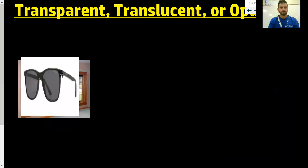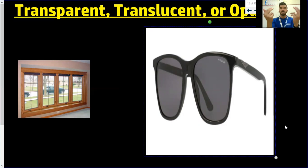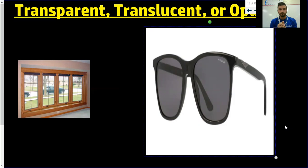Sunglasses — this was the example I was saving because it's the best example of something that is translucent. It's definitely not transparent because when you wear sunglasses, you're trying to block the sun. If it was transparent, all that light would travel through and go straight into your eyes — they'd serve no purpose. If it was opaque and no light traveled through, you wouldn't be able to see — you'd essentially be blind. With translucent, not all the light is coming through. The image on the other side isn't blurry, but not all the light traveling through those lenses is what makes it translucent.